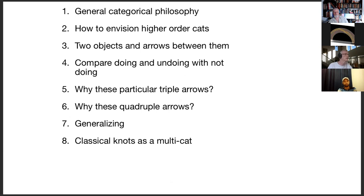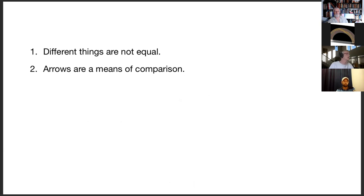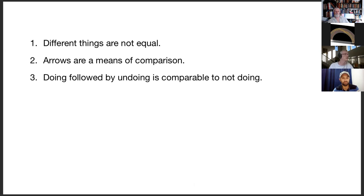The general categorical principles are: first, different things are not equal. If they're not equal, then you should compare them, and the arrows are a means of comparison. Any arrow in a category is a method to compare two things that may or may not be equal. In this sense, doing followed by undoing is comparable to not doing. Sometimes doing followed by undoing is the same thing as not doing, and sometimes it's not, and if it's not, then you have an arrow to compare.